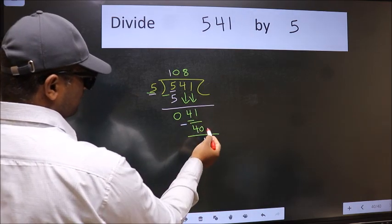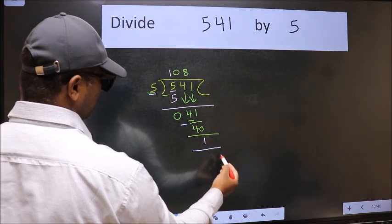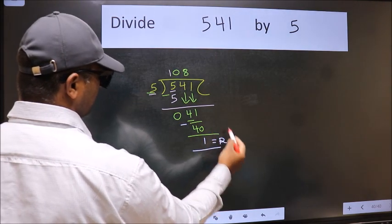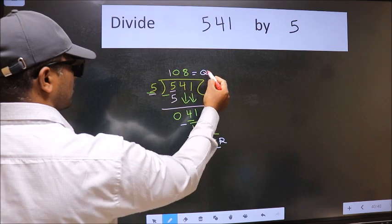No more numbers to bring down. So we stop here. This is our remainder and this is our quotient.